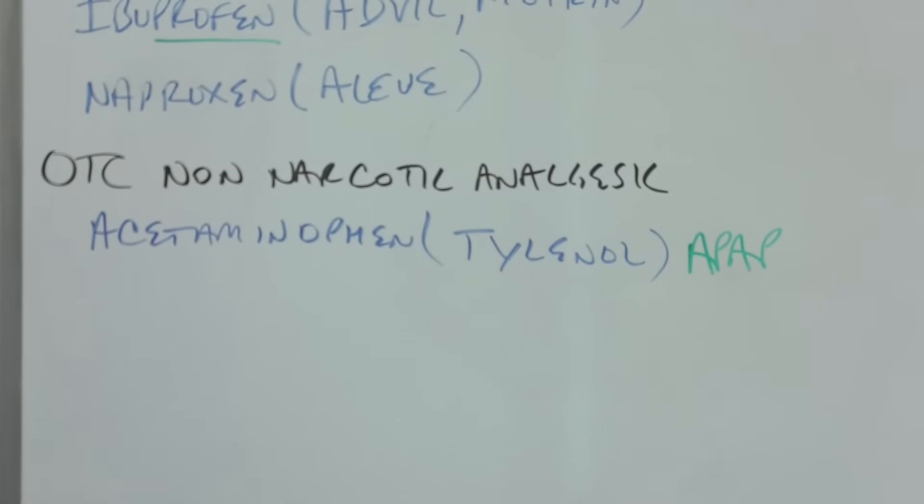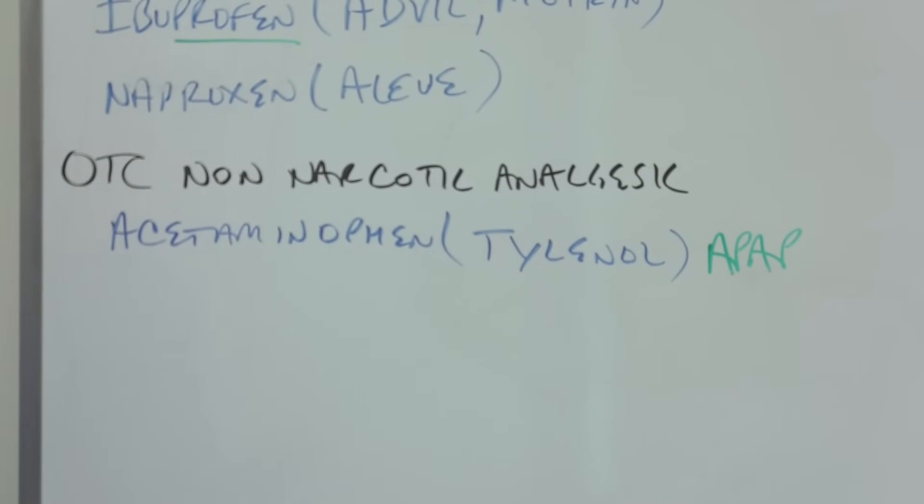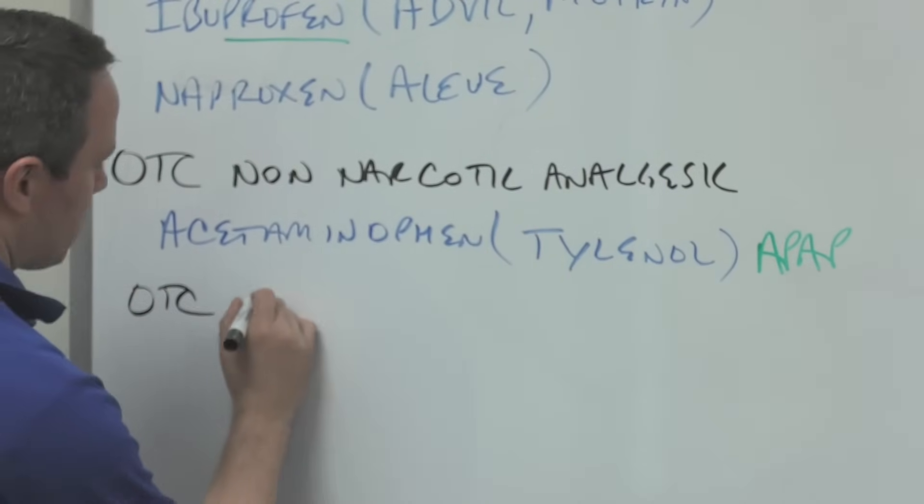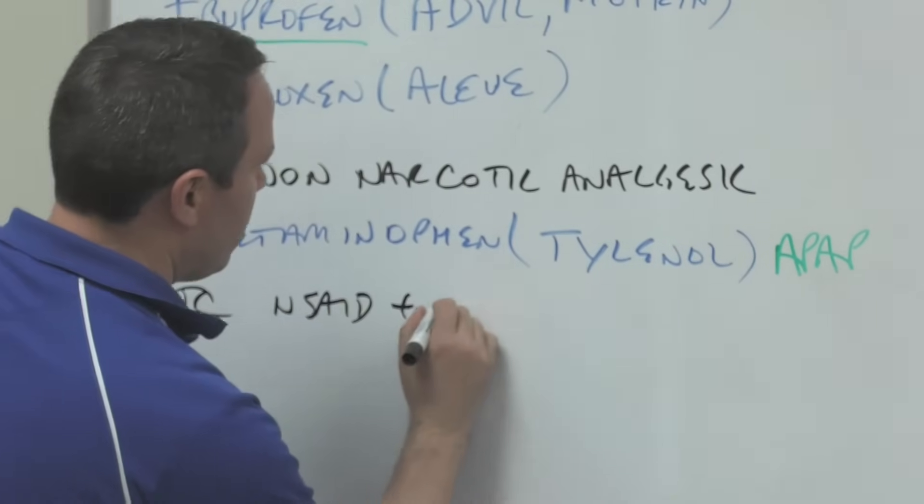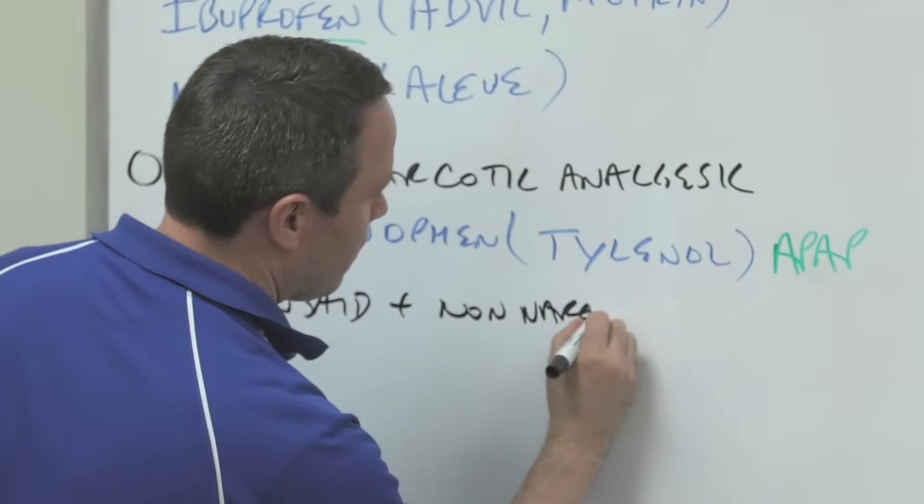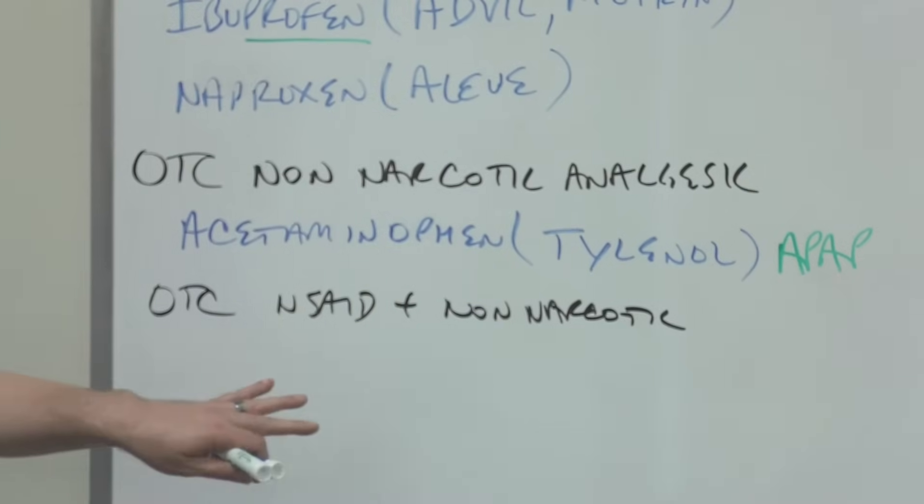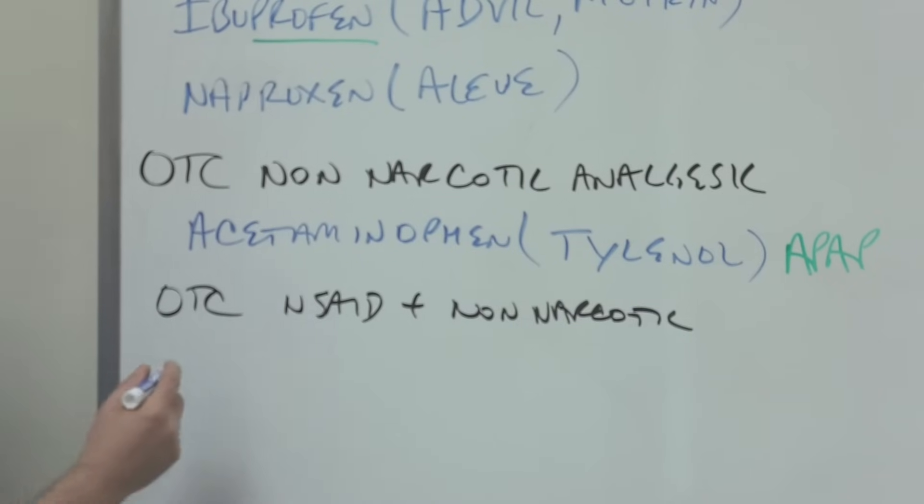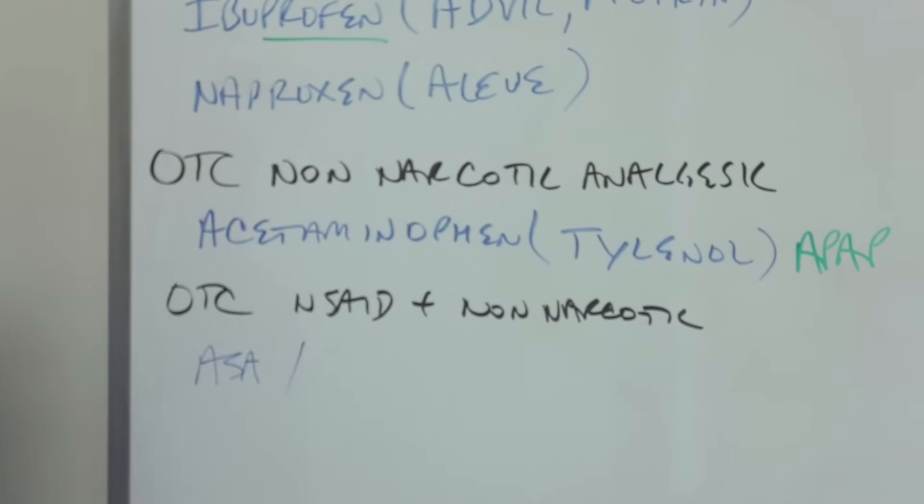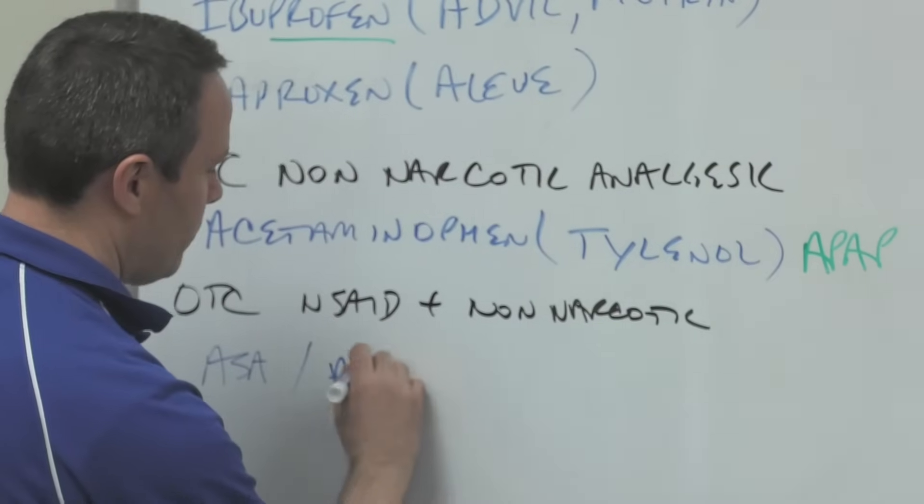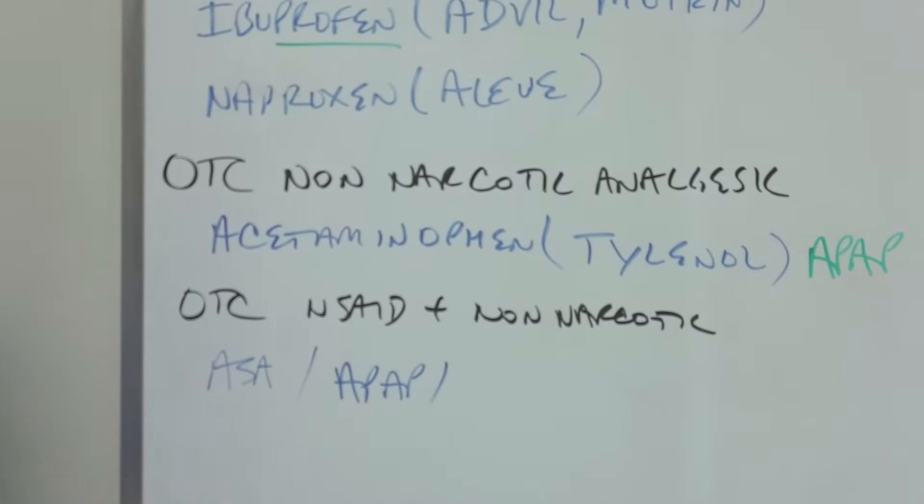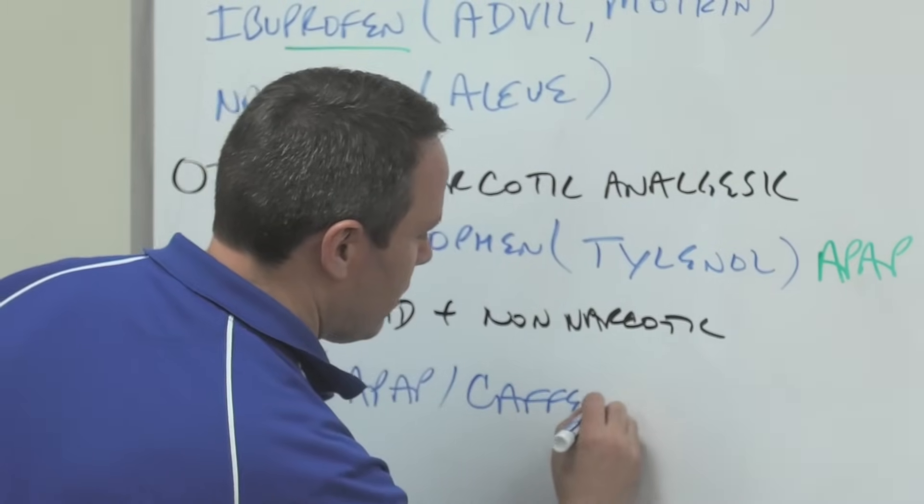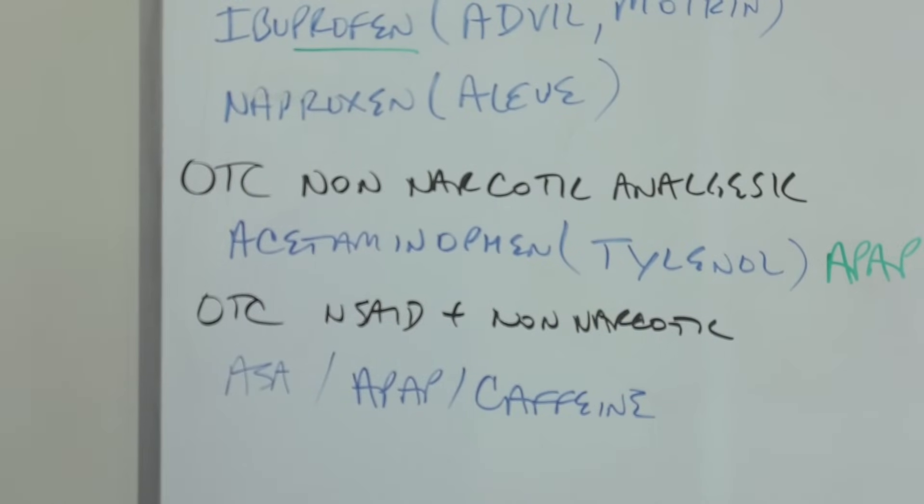We'll use that in just a minute. So we've got those, and these take care of most things, most analgesia, most pains over-the-counter. But maybe it's some kind of a migraine or something like that, so we're going to combine them, and we'll combine the OTC NSAID plus non-narcotic in a medication called Excedrin Migraine. It includes aspirin ASA, Tylenol APAP, and also caffeine. And the caffeine is a vasoconstrictor; it helps narrow the blood vessels in the brain so that there's less pain.